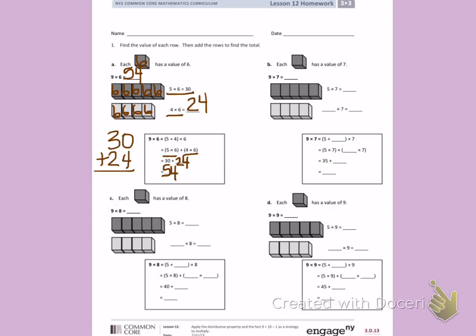Letter B, each cube has a value of 7. So these two pictures are going to help me solve 9 times 7. So here I have 1 7, 2 7's, 3 7's, 4 7's, 5 7's.